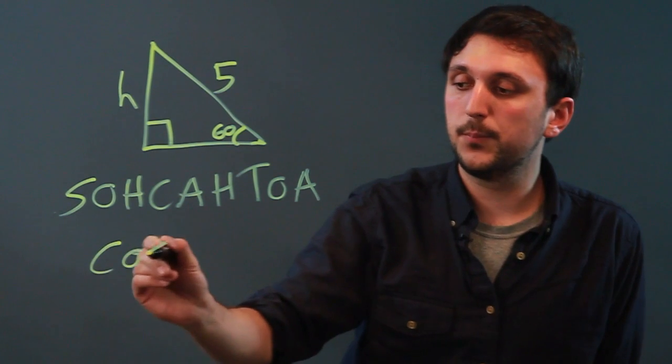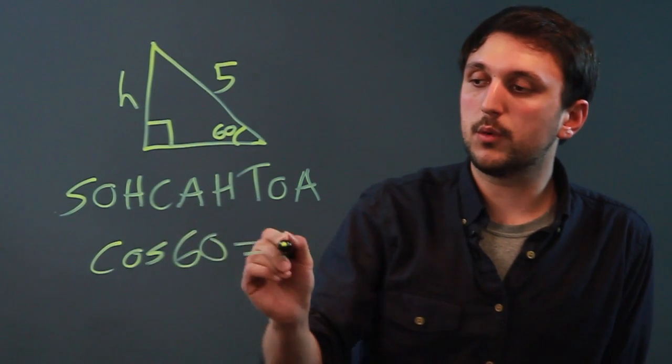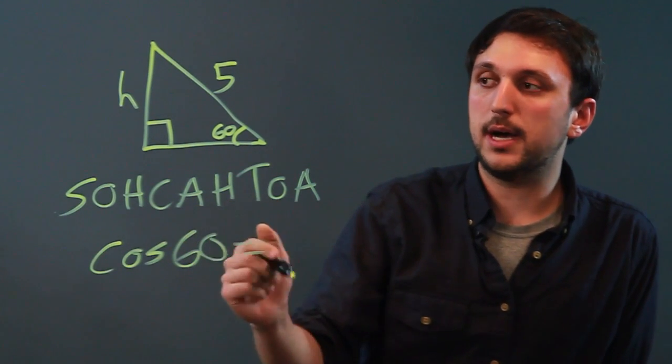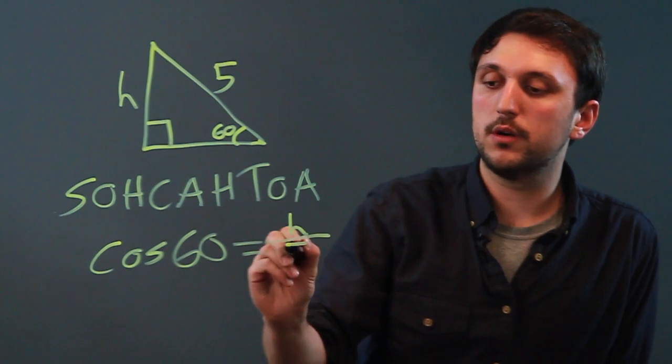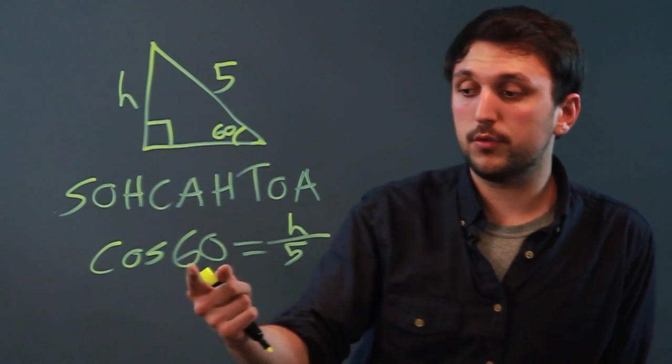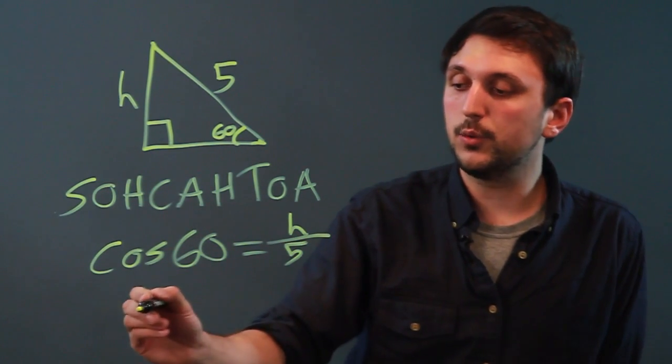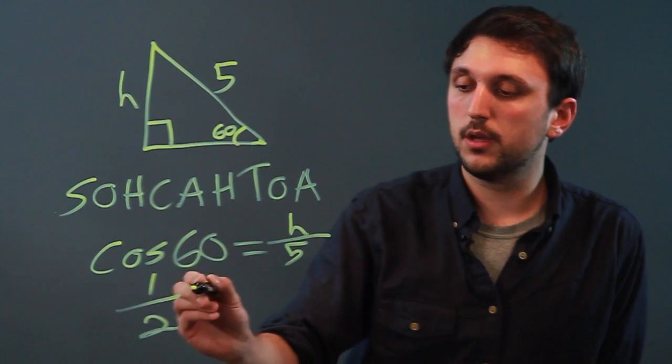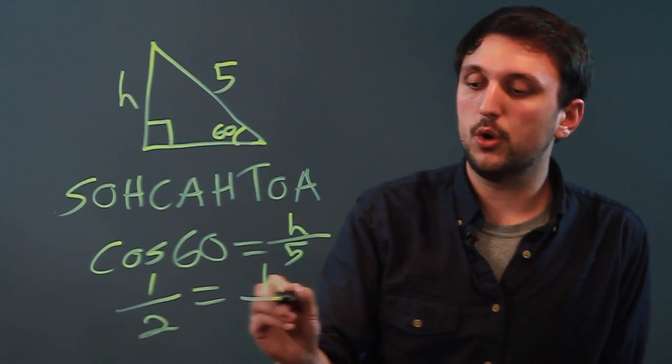The cosine of 60 equals adjacent over hypotenuse. So that's H over 5, and when you plug cos 60 into your calculator you get one half equals H over 5.